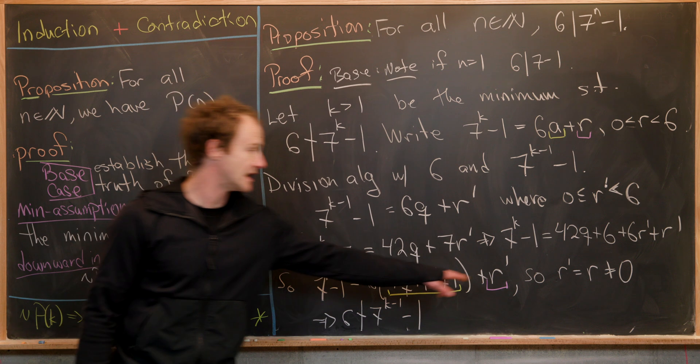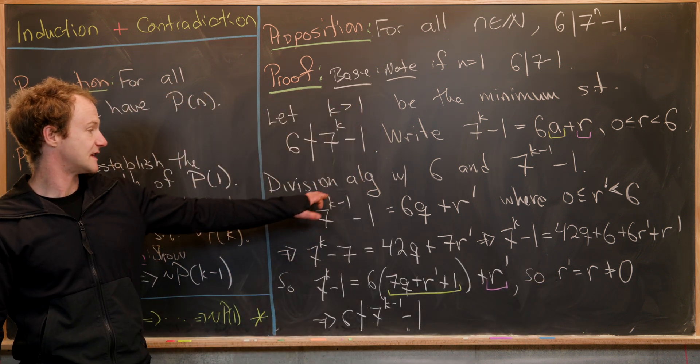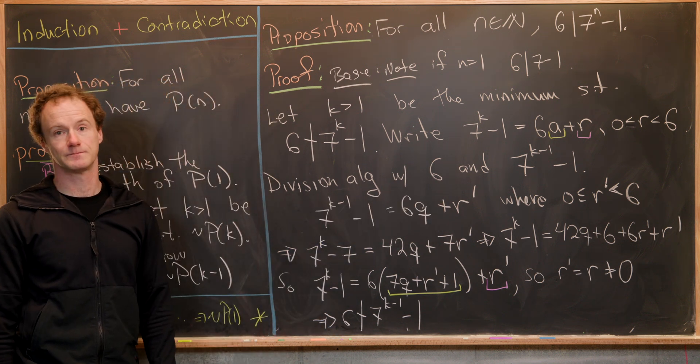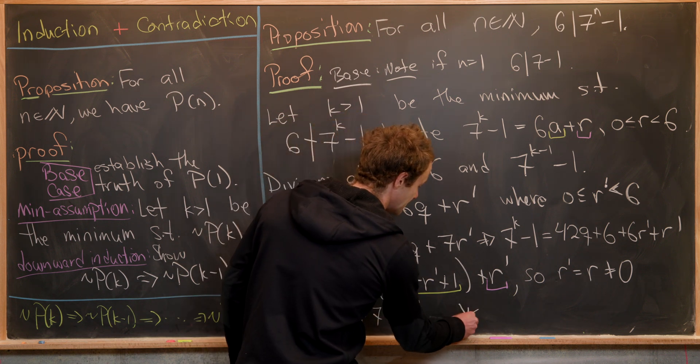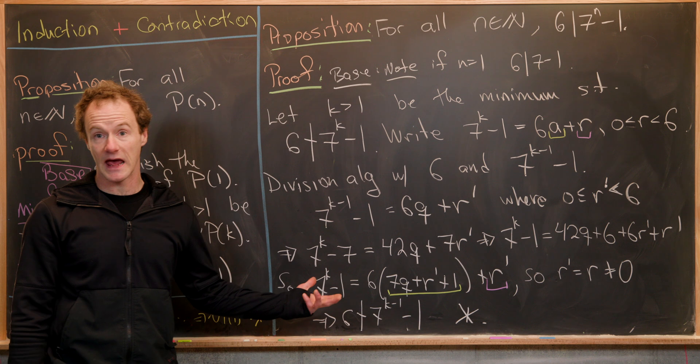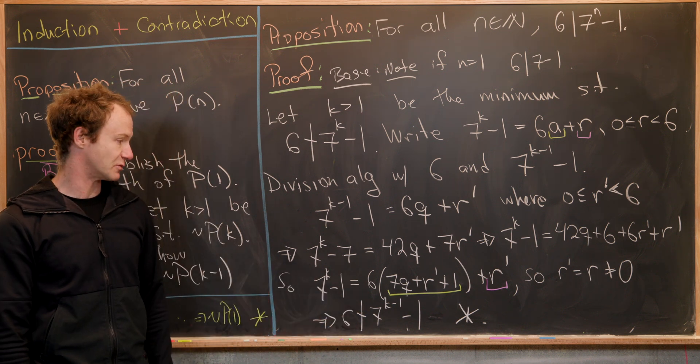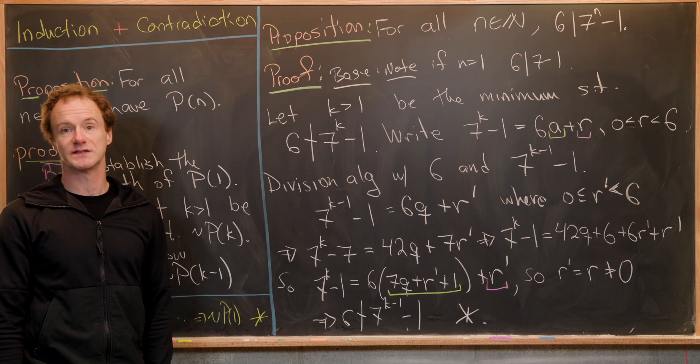That's because we have quotient remainder of seven to the k minus one minus one with a non-zero remainder. But that contradicts the minimality of our k because we found a smaller object which is not divisible by six. That finishes this proof, and that's a good place to stop.